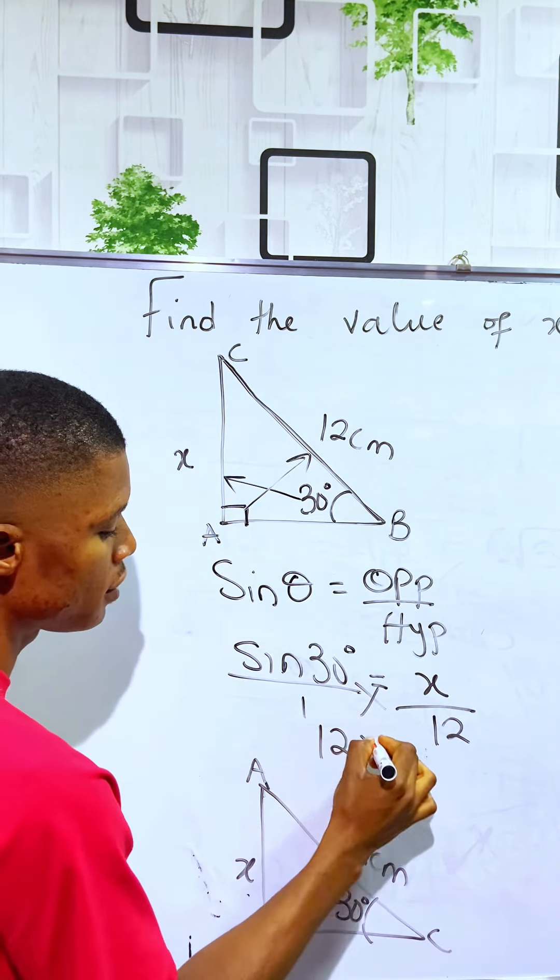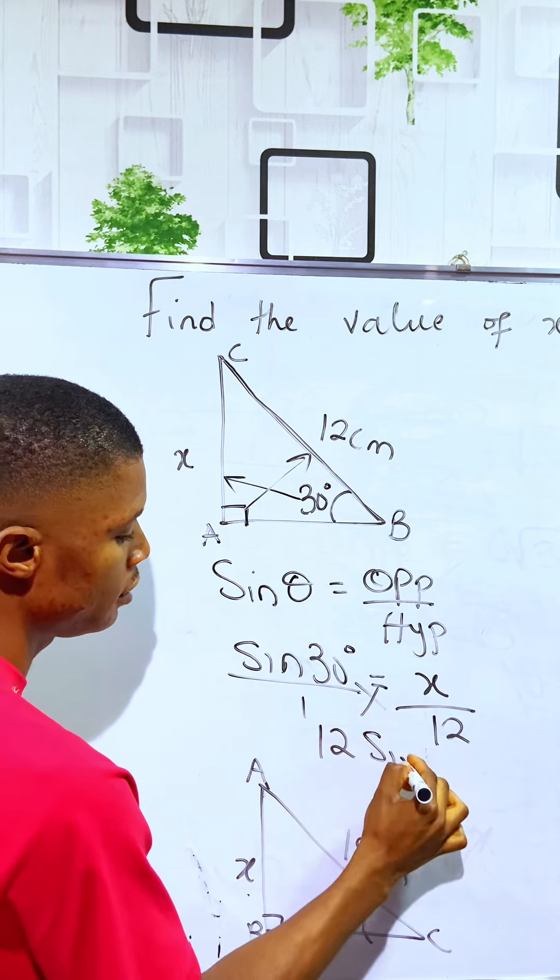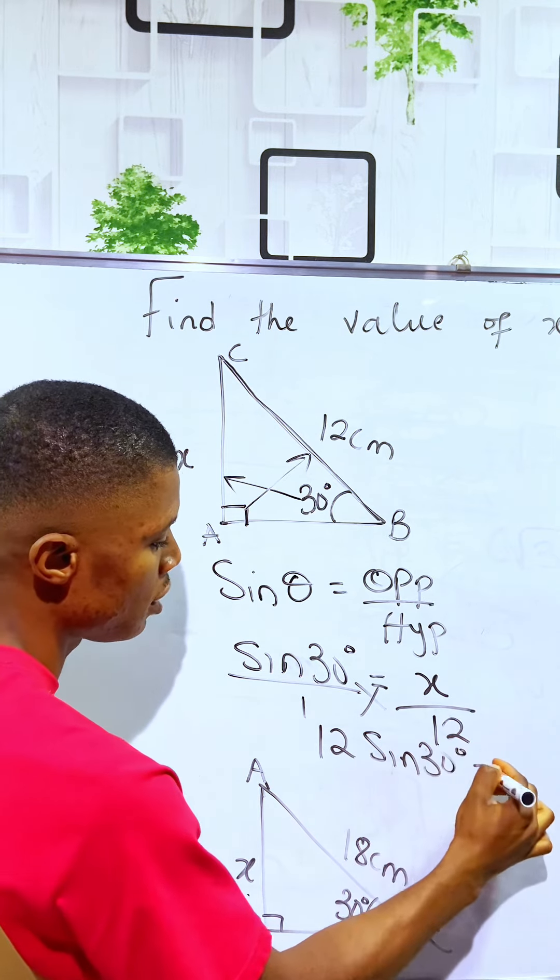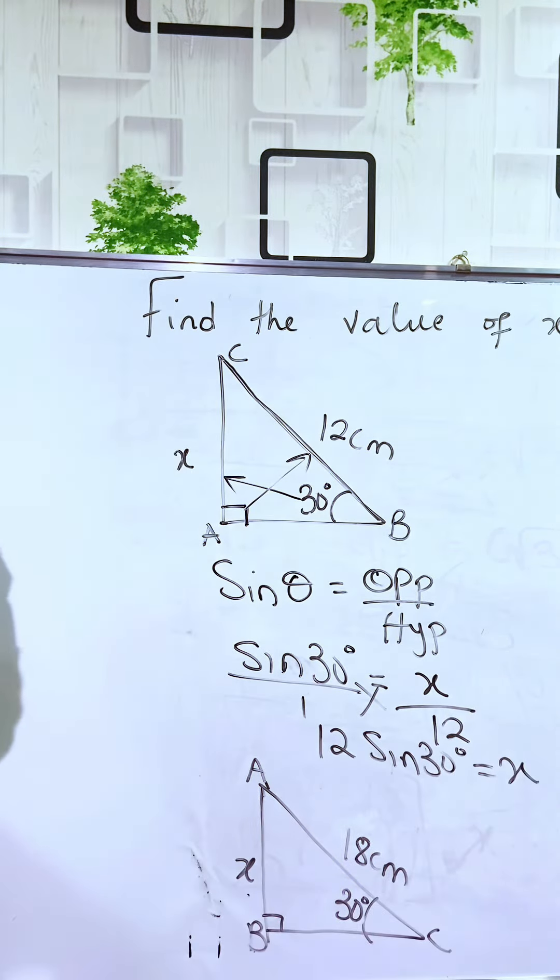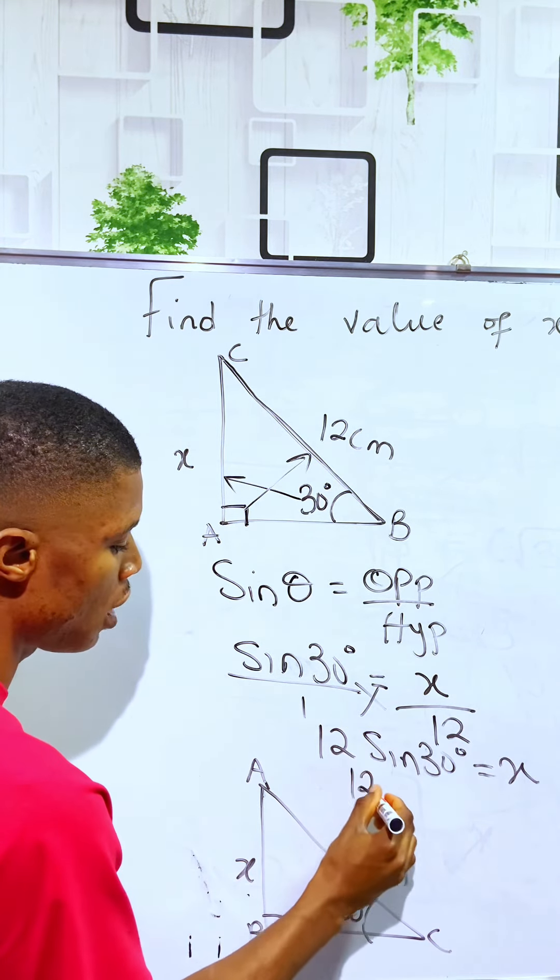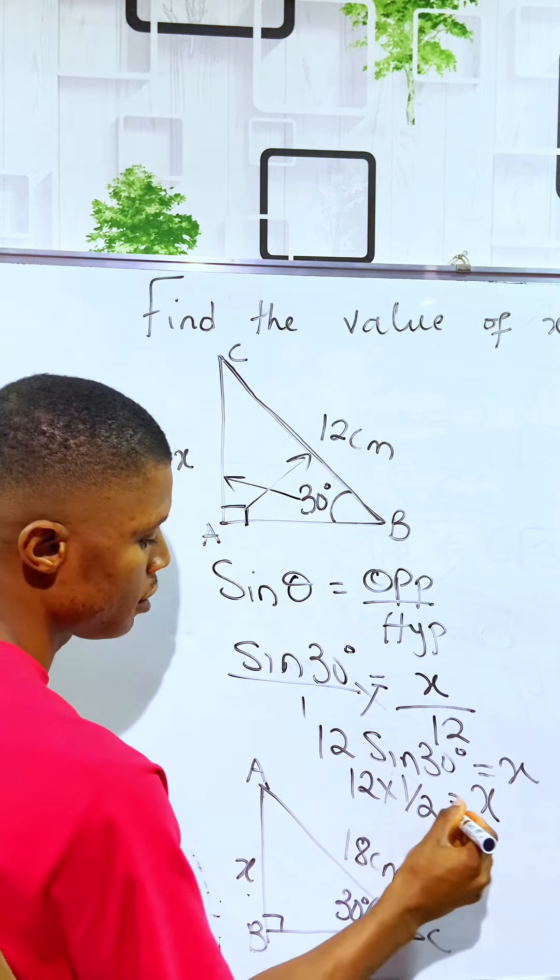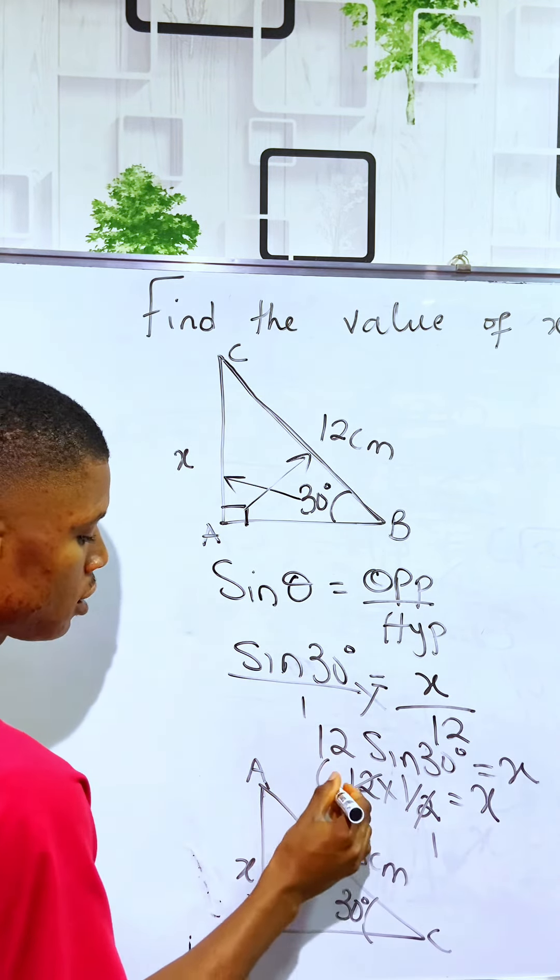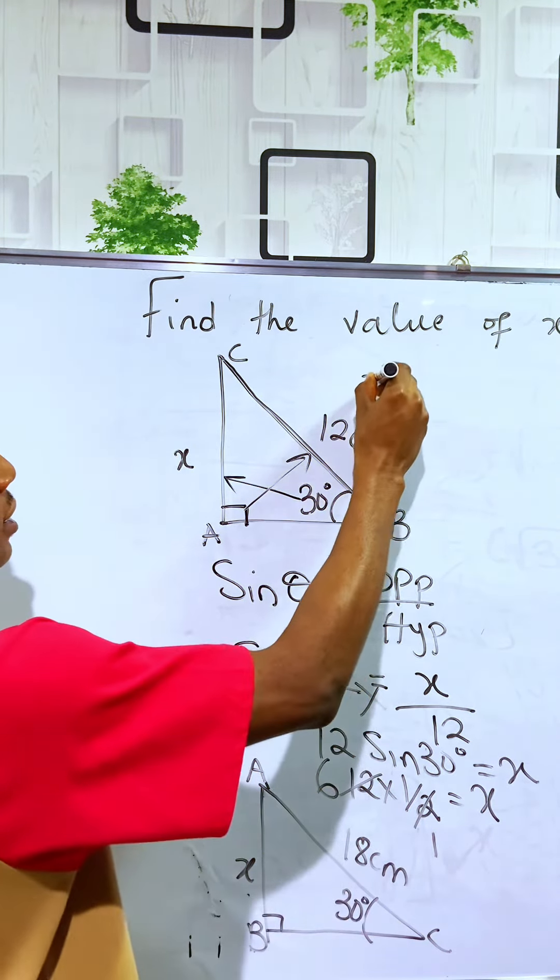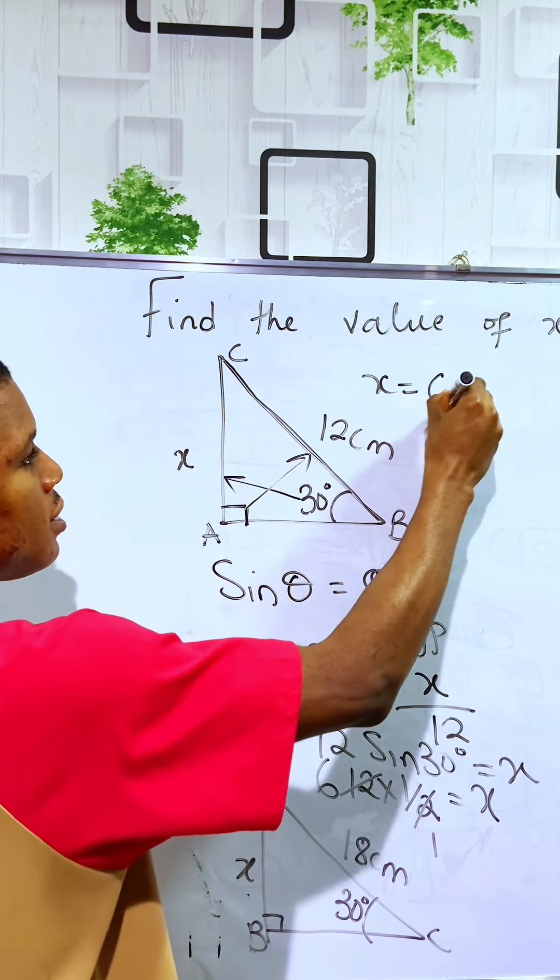We have 12 sin 30° equals x. That is 12 times sin 30°, which is 12 times 1/2 equals x. 12 divided by 2 is 6, meaning that x equals 6 centimeters.